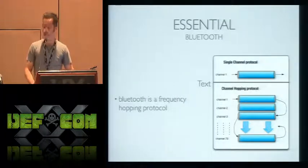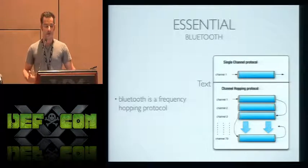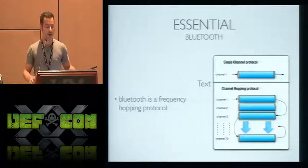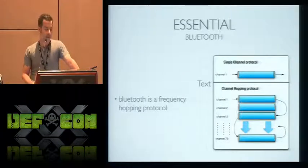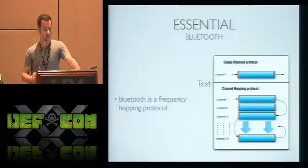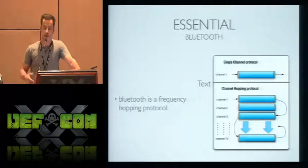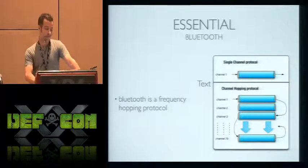The first thing to understand about Bluetooth is it's built upon a frequency hopping protocol. Communication between two devices takes place over 79 different channels, and these devices hop through these channels at about 1600 times per second. The hardware we have to monitor Bluetooth in the air can really only listen to one channel or a small subset of channels at a time, so the data we obtain is going to be very sparse — we're not really going to have a whole conversation, but we can still do a lot with it.